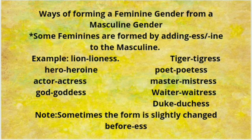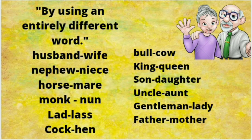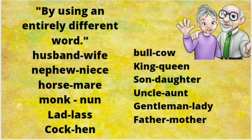Sometimes the form is slightly changed before adding -ess, like tiger drops the E to become T-I-G-R-E-S-S. And sometimes we need to change the entire spelling, like duke becomes duchess. By using an entirely different word, we can also change gender from masculine to feminine: husband becomes wife, nephew becomes niece, horse becomes mare, monk becomes nun, lad becomes lass, cock becomes hen, bull becomes cow, king becomes queen, son becomes daughter, uncle becomes aunt, gentleman becomes lady, father becomes mother.